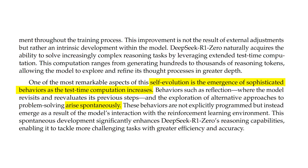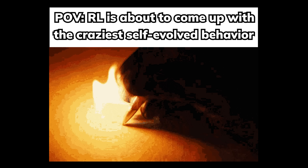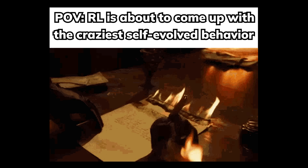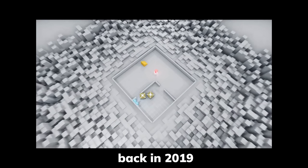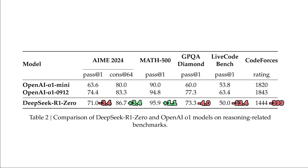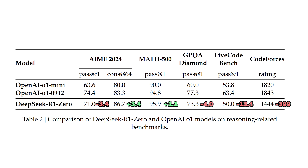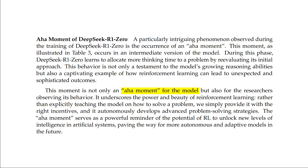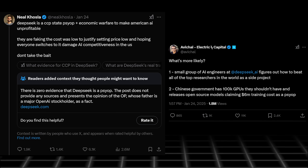During this process, there was spontaneous emergence of sophisticated behaviors like self-reflection — where the model re-evaluates its previous steps — and exploration, where the model finds alternative approaches to problem solving. All these behaviors emerged simply by letting RL interact with the environment freely, similar to that OpenAI research where game agents found rule-bending exploits through simple RL. With only this method, they were already able to get performance near O1 level, and even reached what they called an 'aha moment' — where the model suddenly learns to allocate more thinking time by re-evaluating its initial approach. Some researchers have already replicated these results.